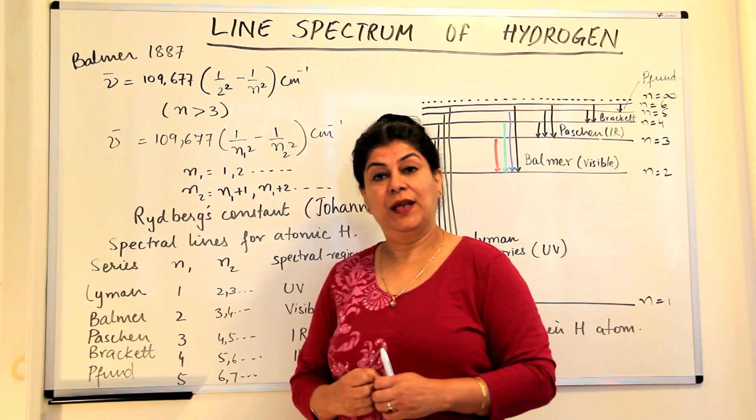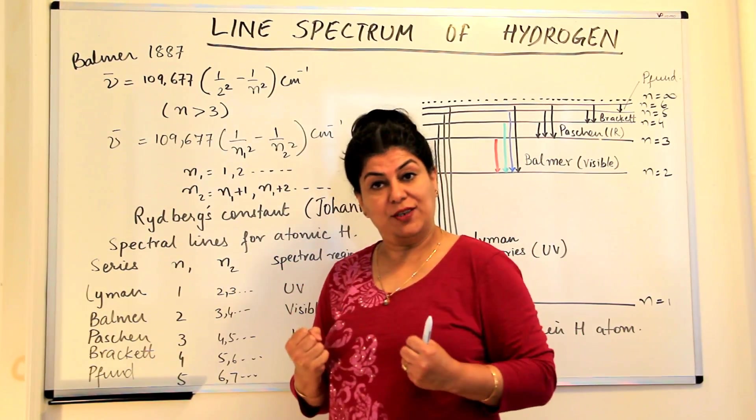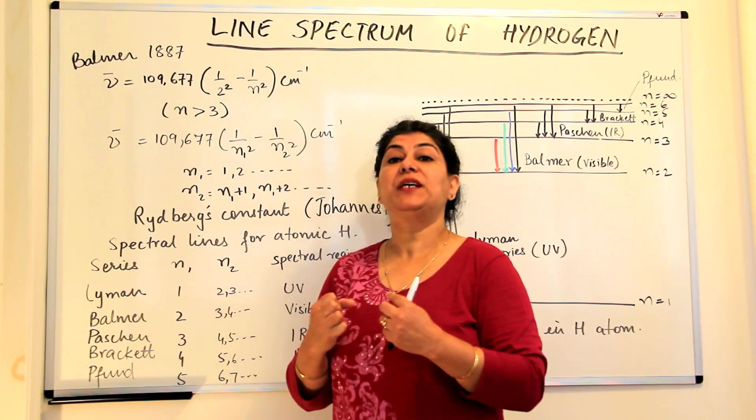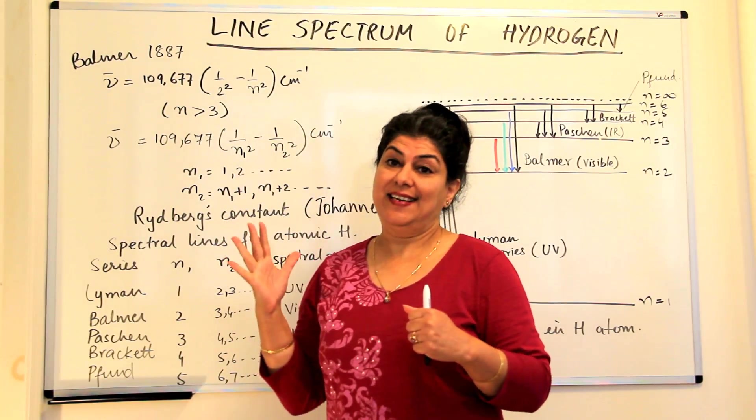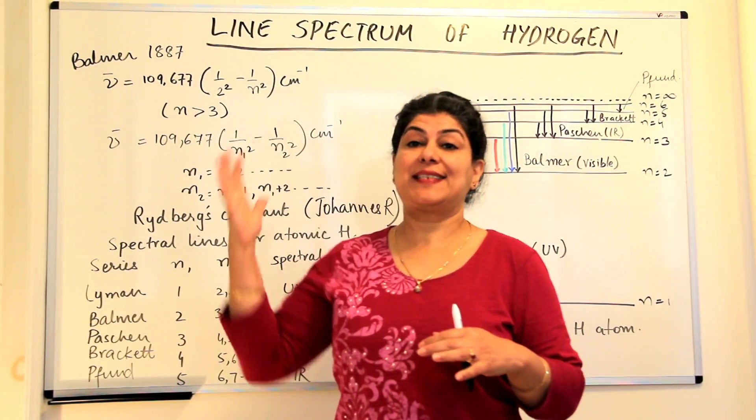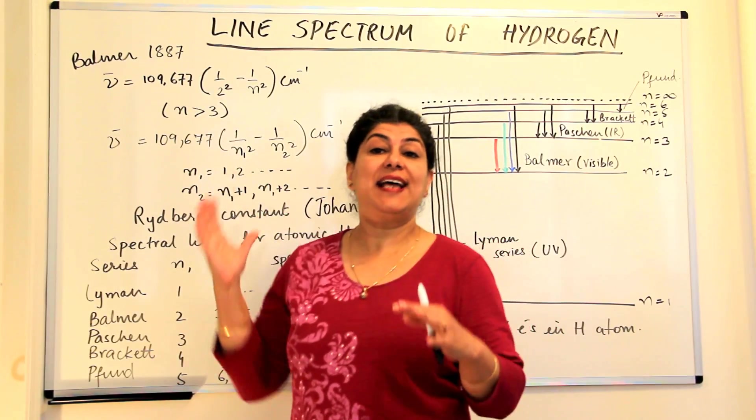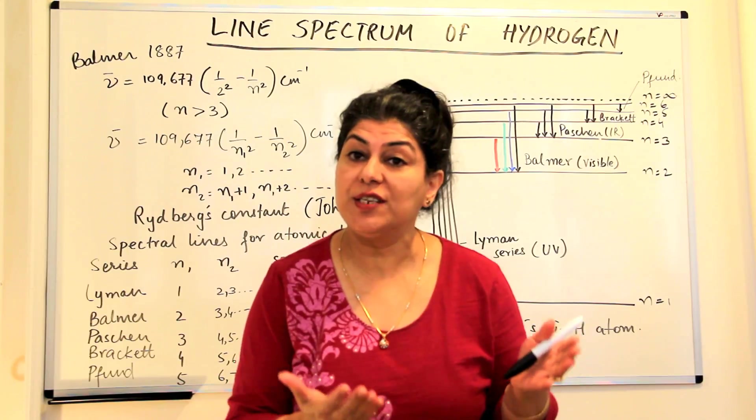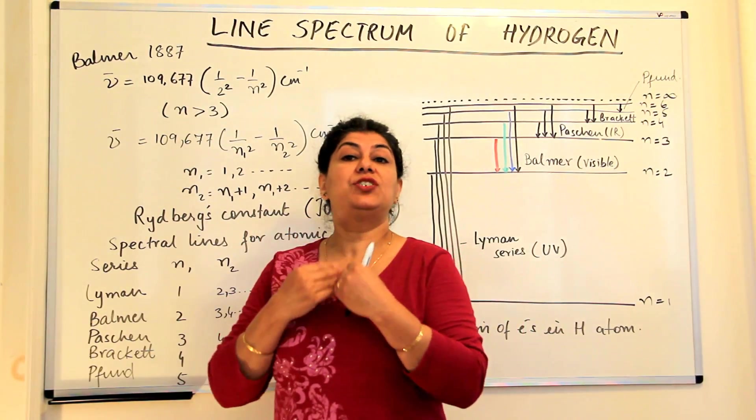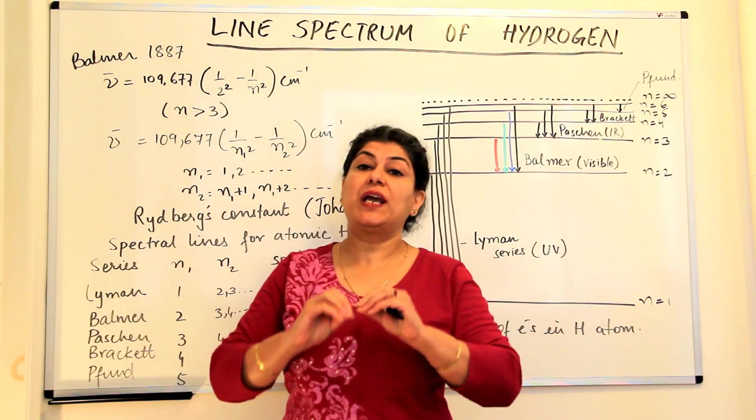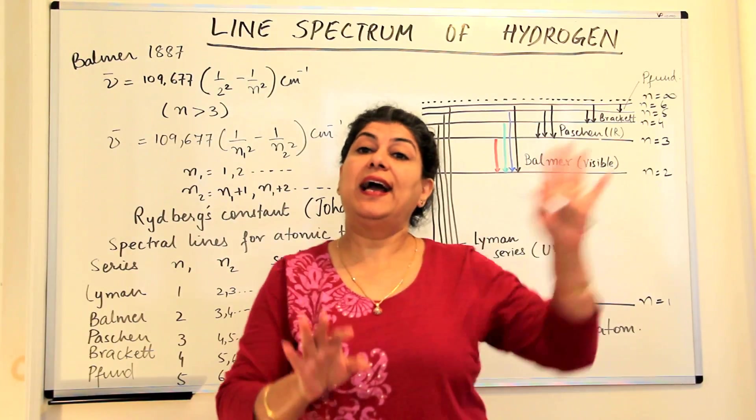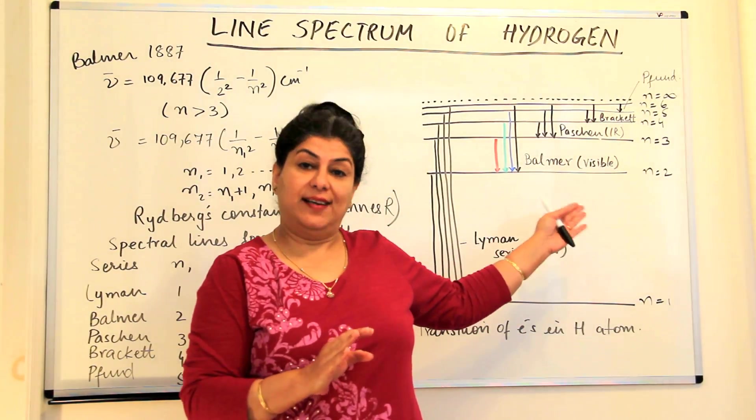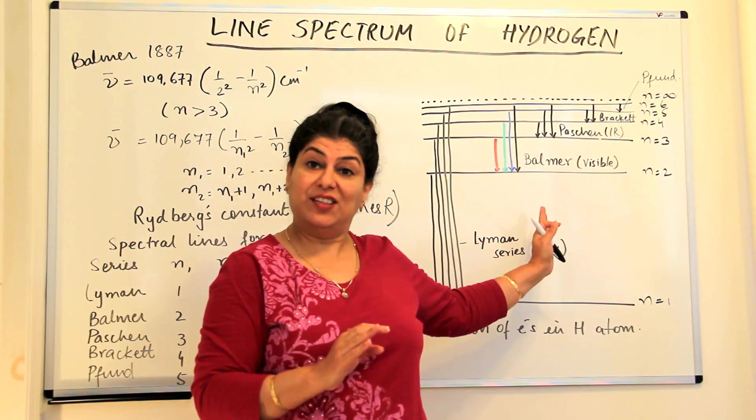Now if you really think, what was happening here? The atoms were absorbing energy and when they absorbed energy, they became excited. The electrons became excited, and when they were excited, they gave out that energy to acquire the original stability. Whatever energy they had absorbed, they would emit the same energy and that would be recorded as one of the lines in the spectrum.